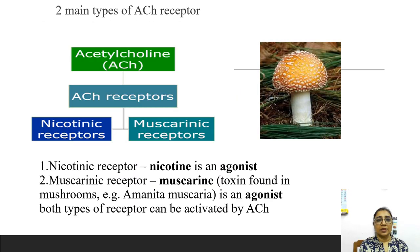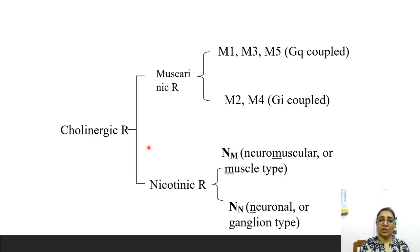There are two main types of cholinergic receptors: nicotinic and muscarinic. For nicotinic receptors, nicotine is the agonist. For muscarinic receptors, muscarine — the toxin formed in the mushroom Amanita muscaria — is the agonist. Both types are activated by acetylcholine. Muscarinic receptors are divided into five groups: M1, M2, M3, M4, and M5. The odd-numbered receptors M1, M3, and M5 are Gq-coupled excitatory receptors, while M2 and M4 are inhibitory type receptors.